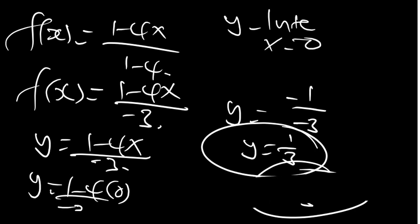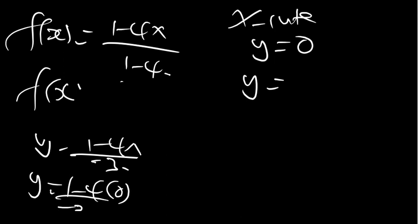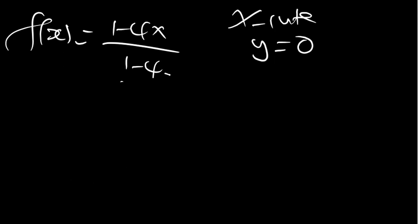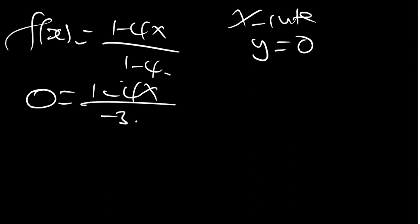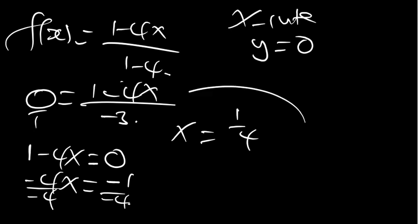Now, to find the x intercept, we set y equal to 0. So we say 0 is equal to 1 minus 4x divided by negative 3. We cross multiply and find that 1 minus 4x is equal to 0 times negative 3, which gives 0. We shift 1 to the other side, remaining with negative 4x equals negative 1. Dividing both sides by negative 4, x equals 1 over 4. So our x intercept is at 1 over 4, represented as the point (1/4, 0).